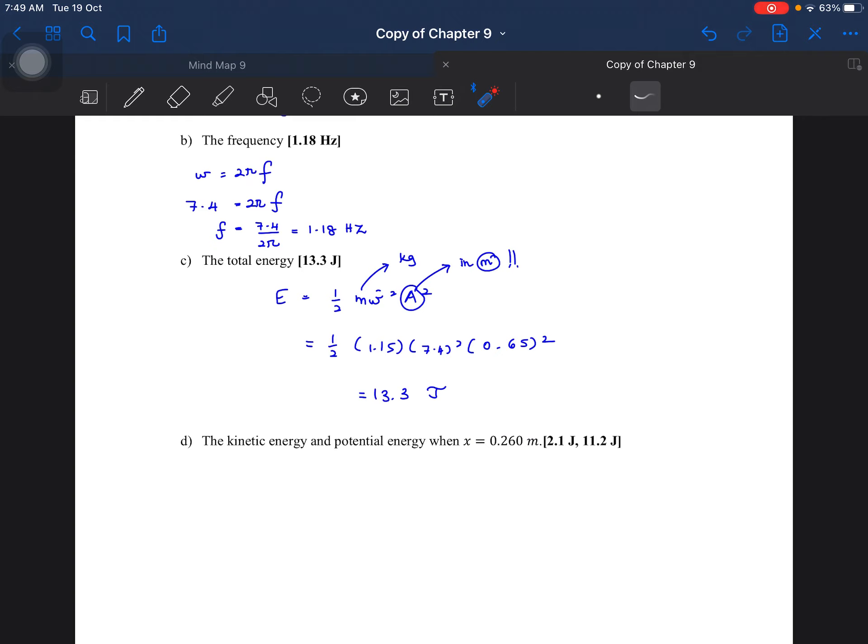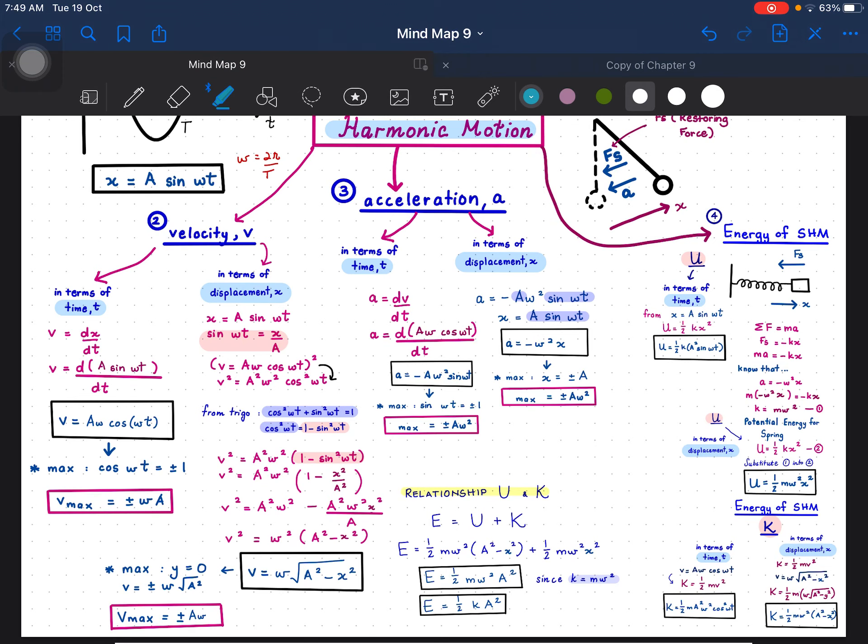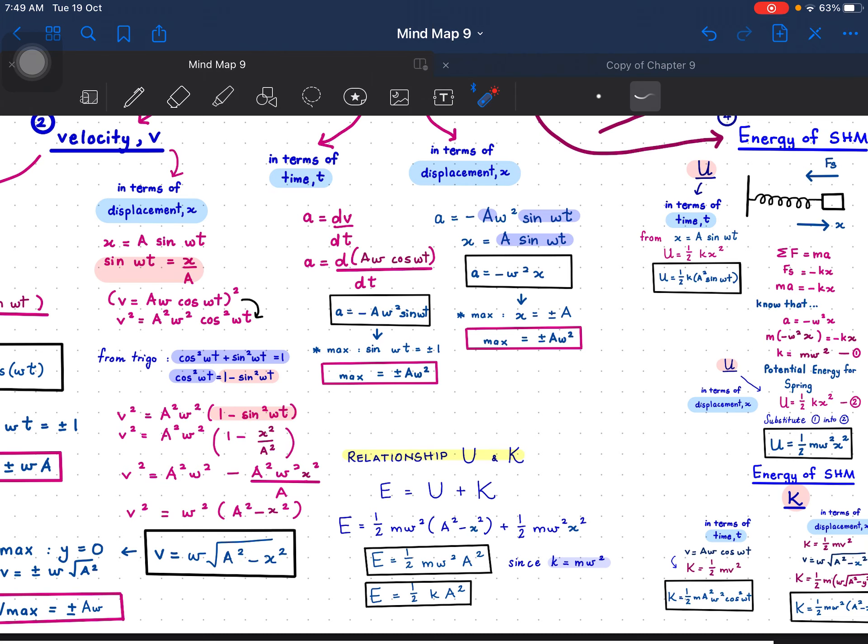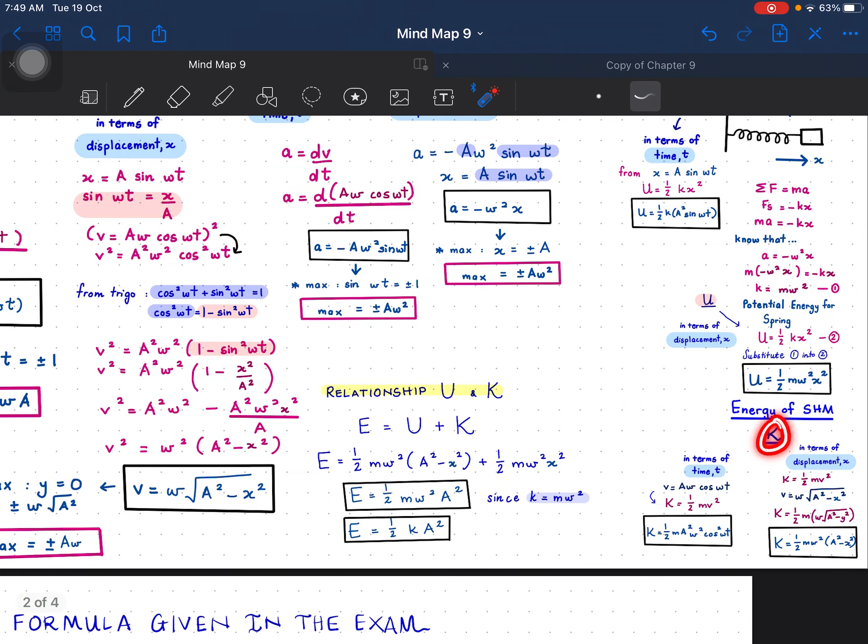And then, dia minta kinetic energy and then potential energy when X equals 0.260. Take a look at your mind map again. So ni adalah U dengan K. Dia minta K. Dia minta kinetic energy dengan potential energy. So kita tengok K. K ni kalau dia kasi displacement, so you have to use this formula.